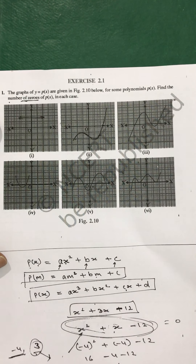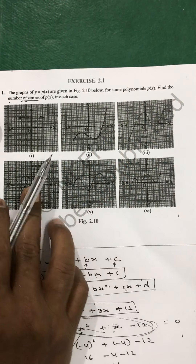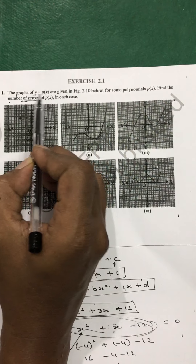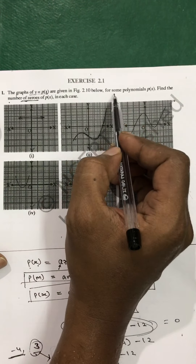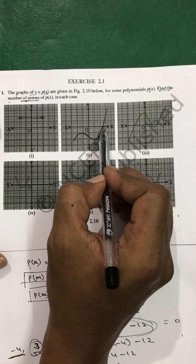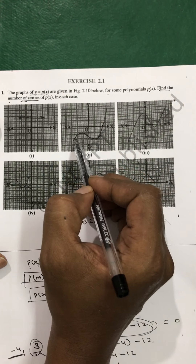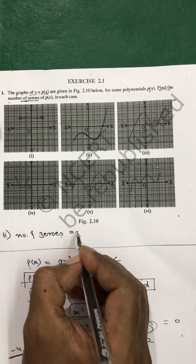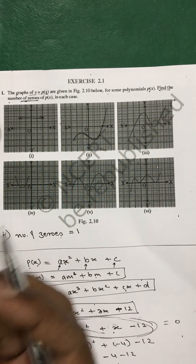This may be slightly confusing — how a polynomial is presented in the frame of a graph. I will not go into that detail right now as it is not in your portion, and we will make a separate video for it. For now, the question is: given the graph y equal to p of x for some polynomials, find the number of zeros in each case. The graph is cutting the x-axis at only one point, so the number of zeros in question 2 is 1.